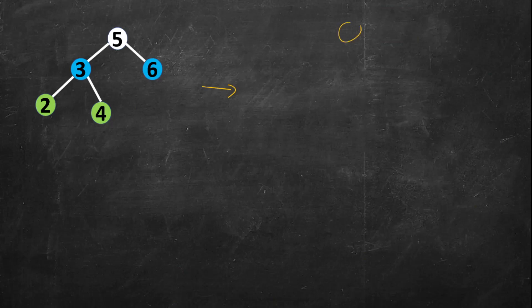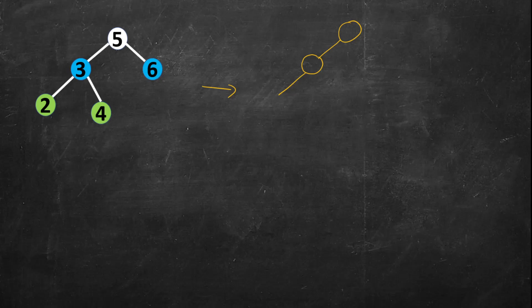Let's draw the example tree. To calculate the tilt of node 5, we need the combined weights of all its child nodes — it doesn't know yet, so it asks its left child for the cumulative weight of the subtree rooted at it. This propagates further down. Node 2 has no left or right child, so it asks null children which return zero.